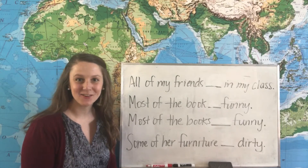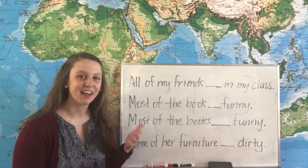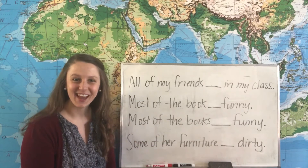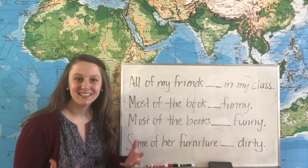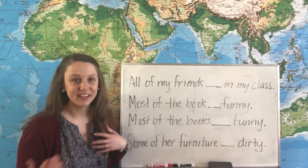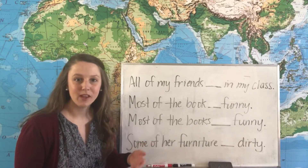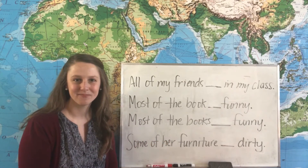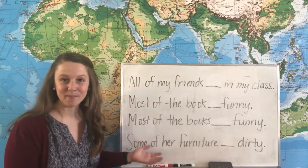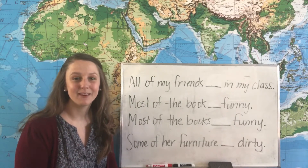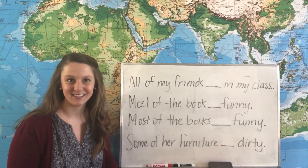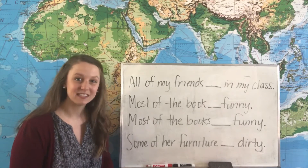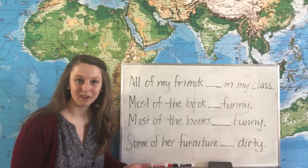When we use expressions of quantity like all of, some of, or most of together with a noun, we need to decide if the noun is singular or plural so we know what kind of verb to use with it. In these examples we're going to use the be verb for all of our sentences, and we need to decide in each case if the subject is singular or plural.